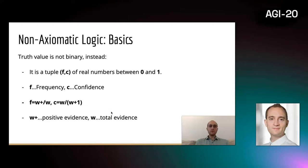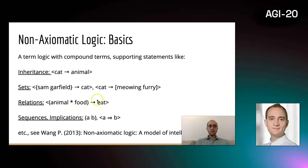The non-axiomatic logic doesn't use a binary proof value, but instead uses a tuple of frequency and confidence, where frequency is the ratio of positive evidence over total evidence, and confidence is the total evidence mapped to a value between 0 and 1.